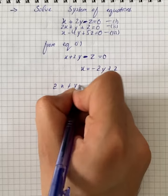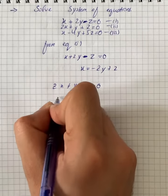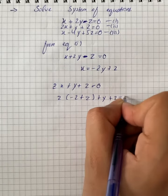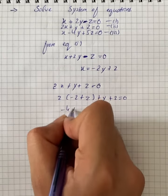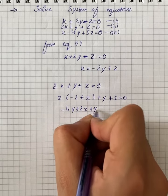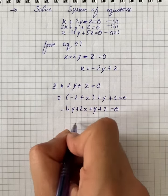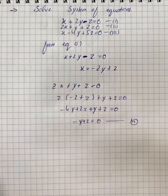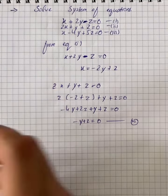That will give us 2x plus y plus z equals 0. Substituting, 2 into minus 2y plus z plus y plus z equals 0. On simplification we have minus 4y plus 2z plus y plus z equals 0, which gives minus y plus z equals 0. Let it be equation number 4.